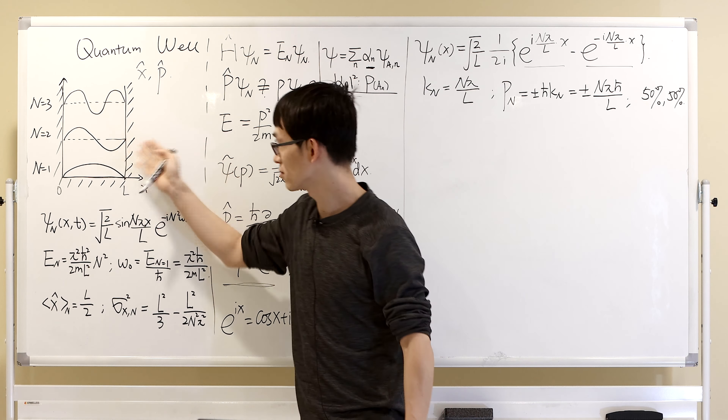Zero — because if the particle has momentum pointing right, it would move all the way out of the potential well. So the best the particle can do is move back and forth, and on average the momentum is zero. You can also calculate this using the expectation value definition.